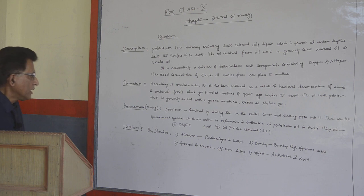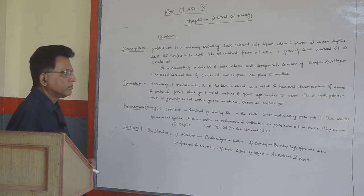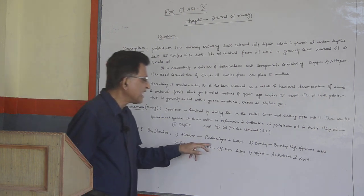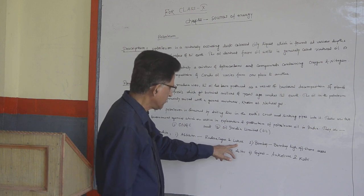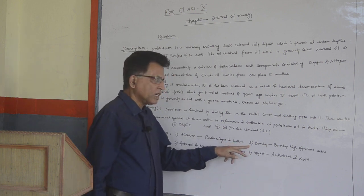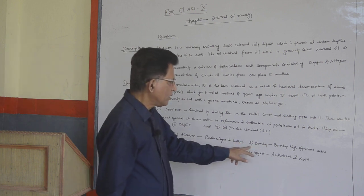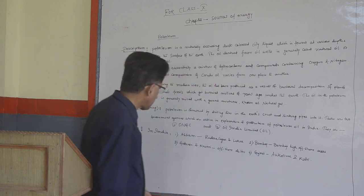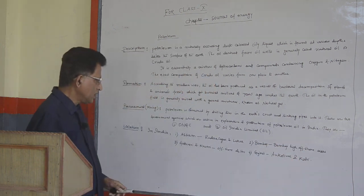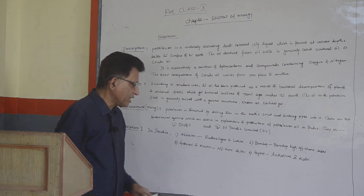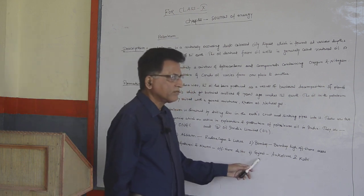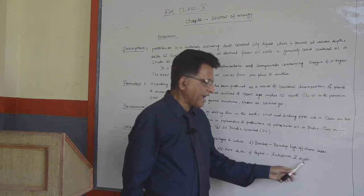Location in India: Assam, Rudya Sagar and Lakwa. Number 2, Bombay High Offshore Areas. Number 3, Godavari and Kaveri Offshore Deltas. Gujarat, Ankleshwar and Kalol.